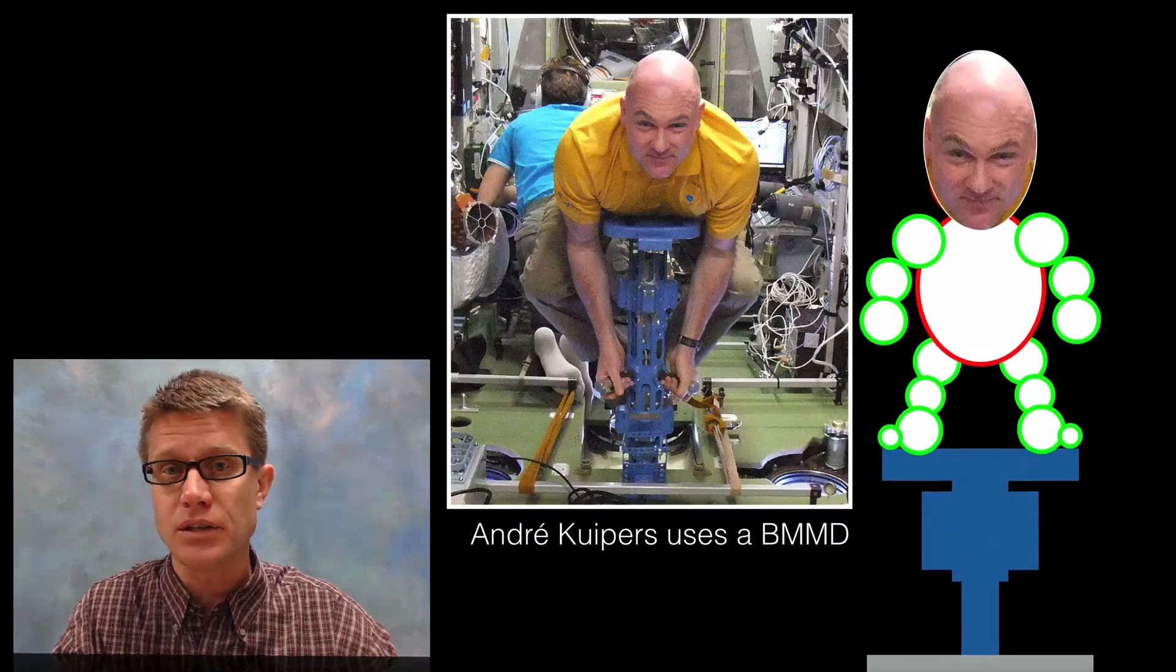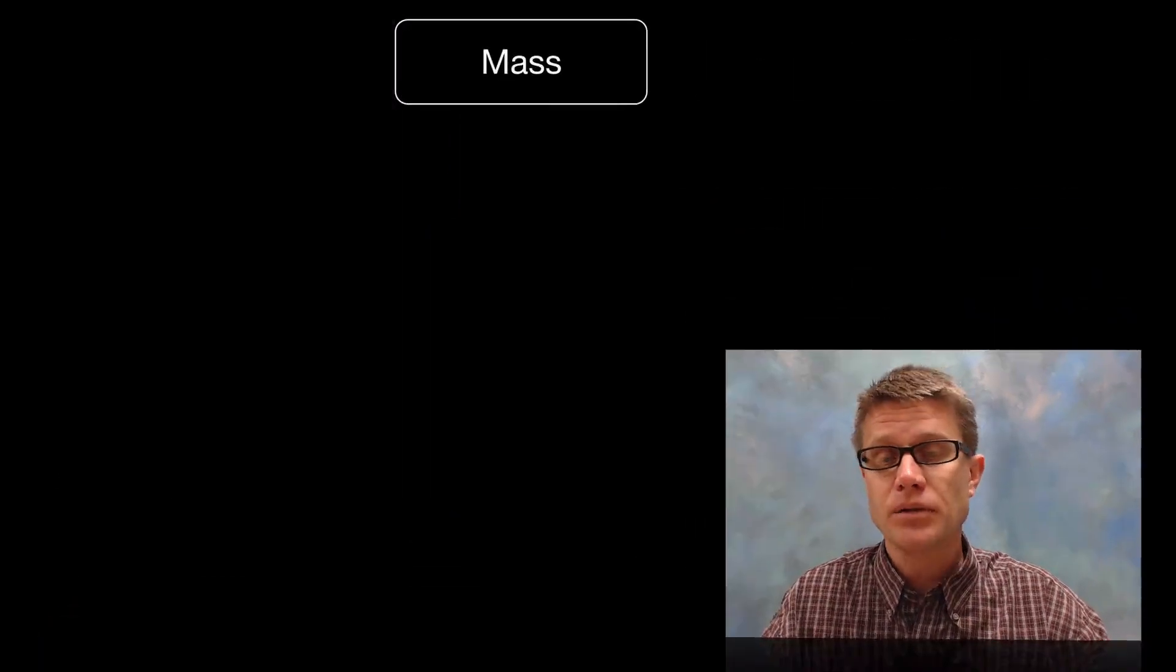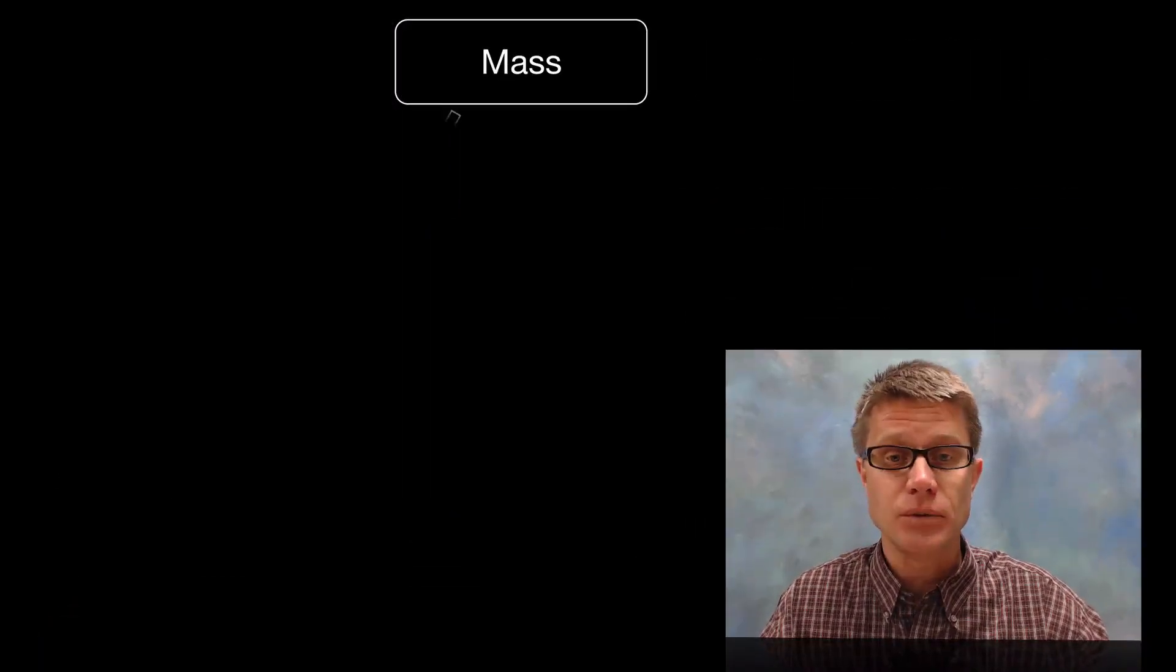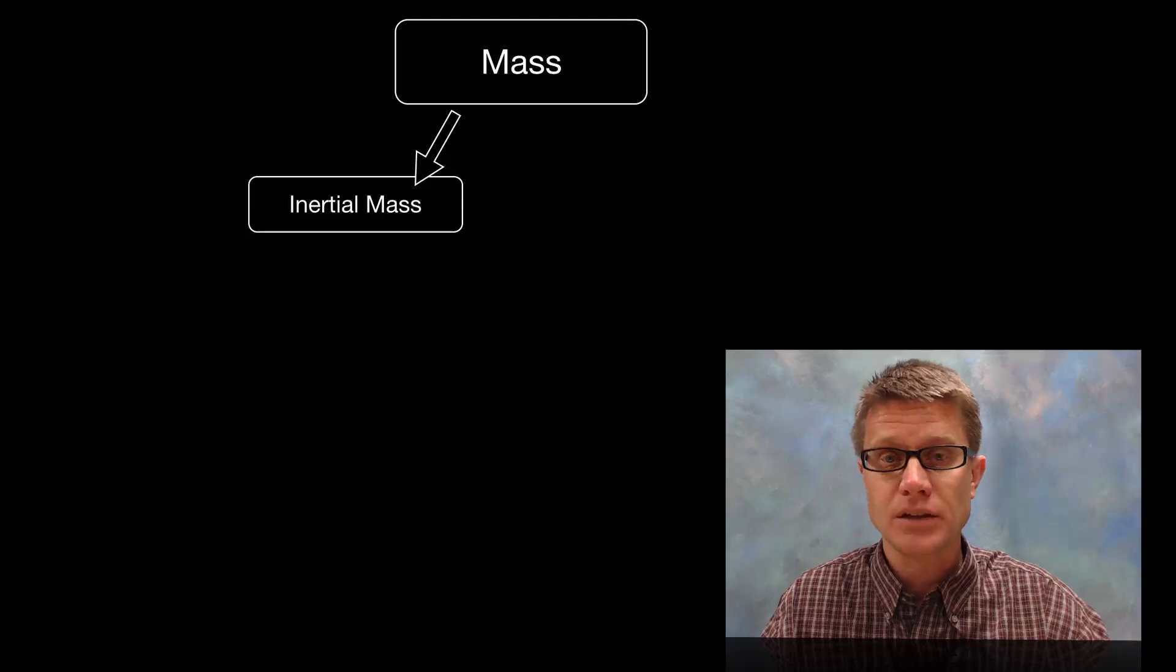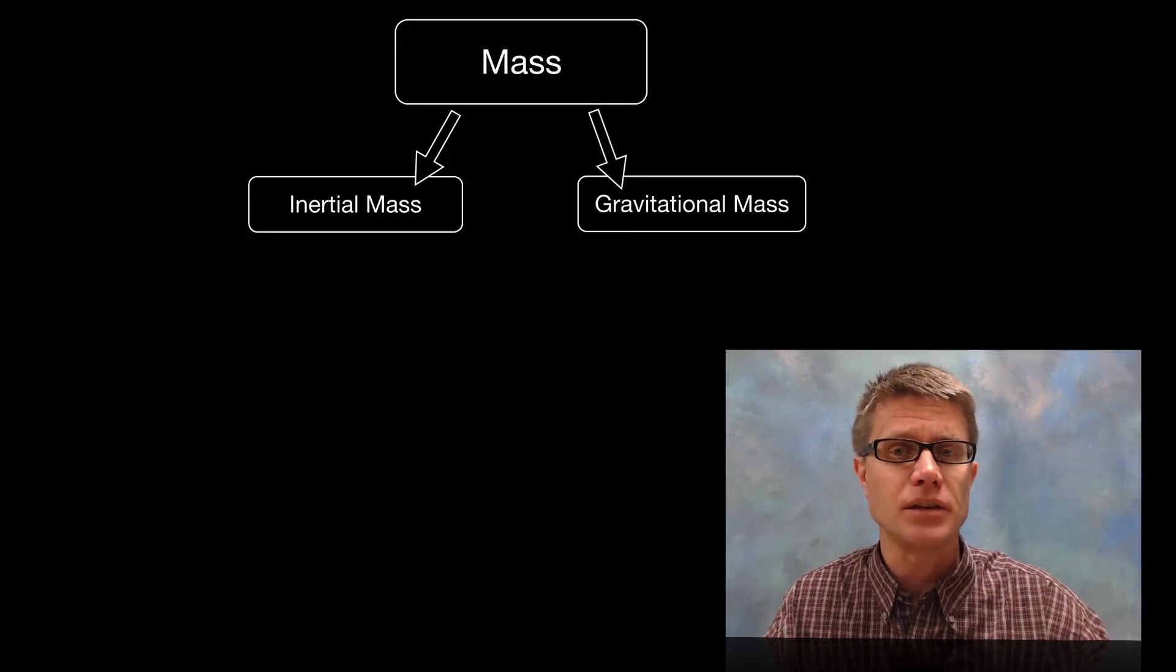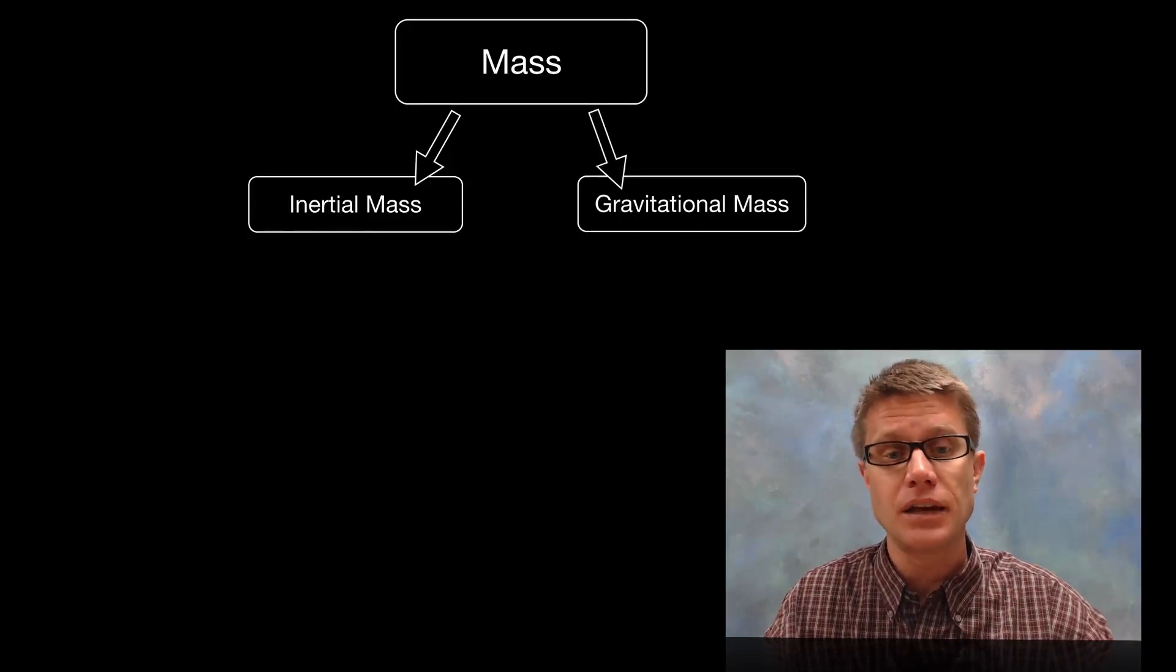Since the spring constant remains the same, you can figure out the mass of the astronaut. This is one way to measure mass. We call that inertial mass. But there is also gravitational mass, and I will talk more specifically about that in the next video.